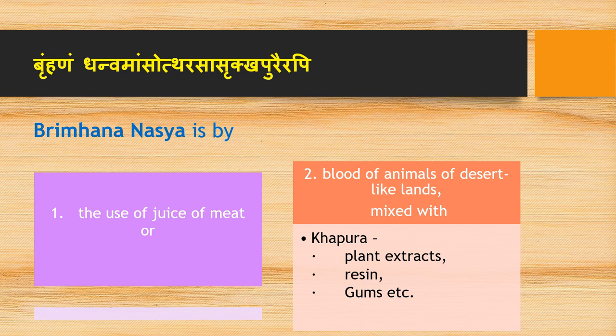Brumhanam Nasya is also indicated for Krichrabodha (difficulty in opening of eyes) and Ababahuga (difficulty of movement of arm). It is administered by the use of juice of meat or blood of animals of desert-like land, mixed with ghee, plant extract, resins, gums, etc.